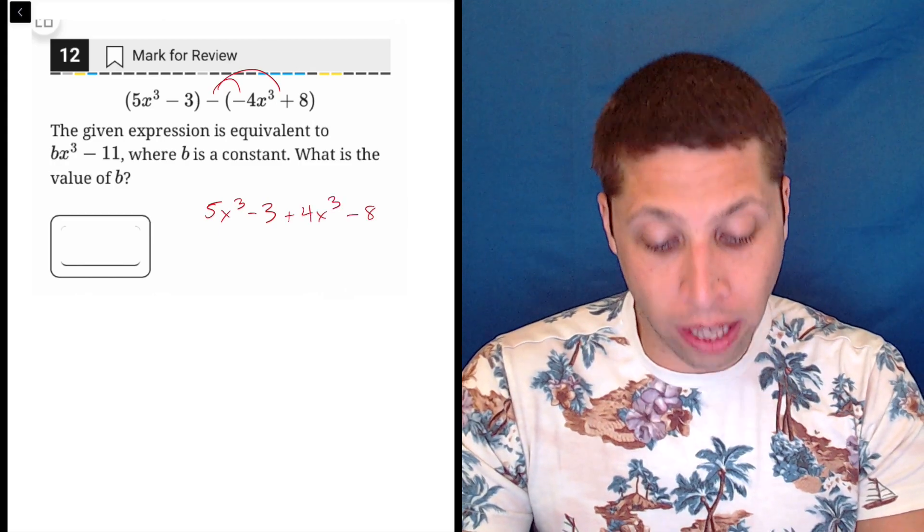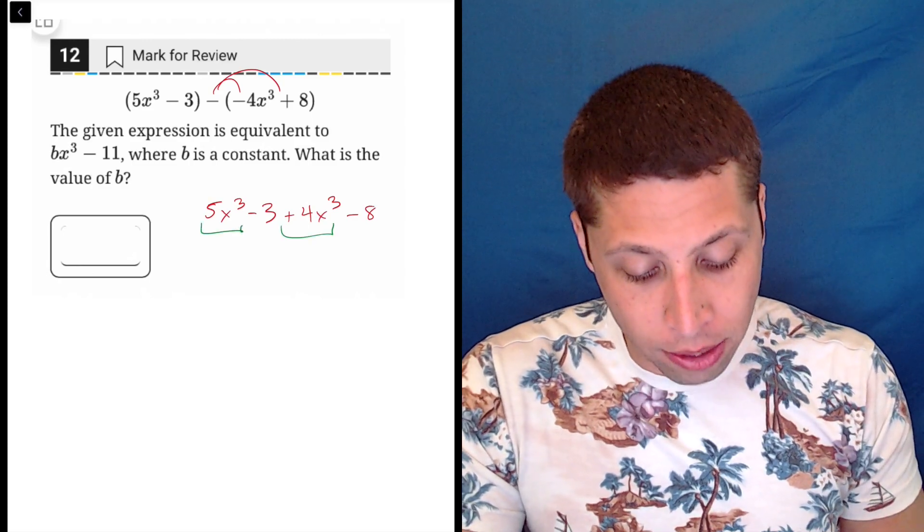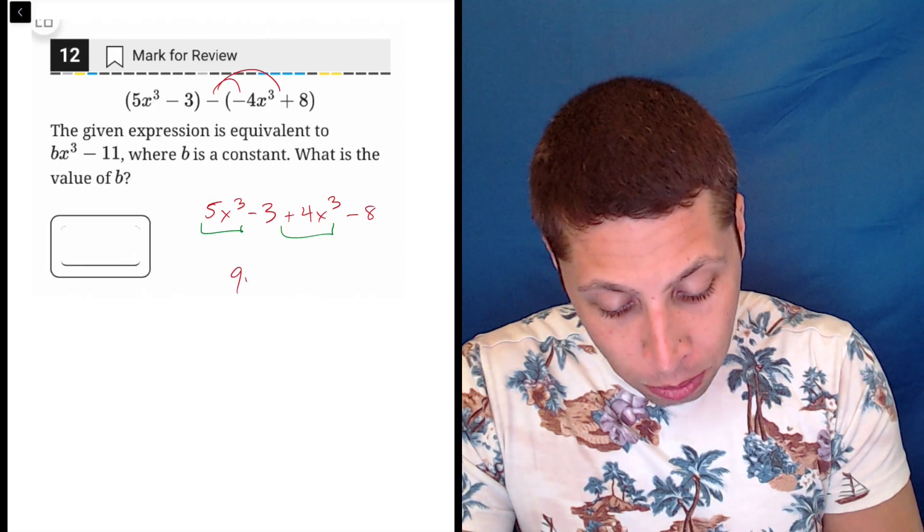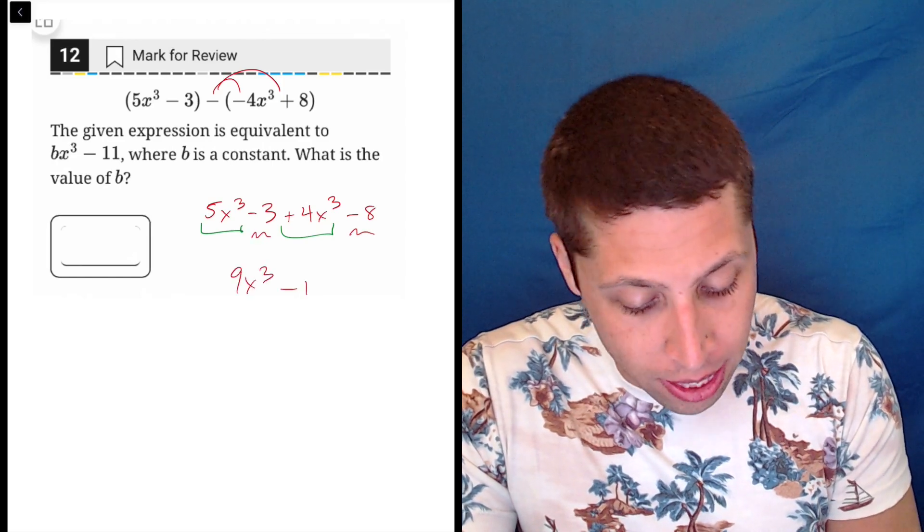And now we would, again, just kind of doing the simplest thing, combine like terms. So 5x cubed plus 4x cubed is 9x cubed. And then the negative 3 and the negative 8 is negative 11.